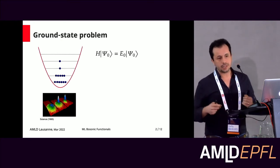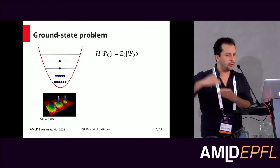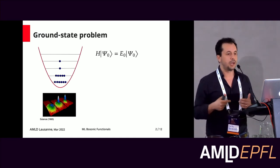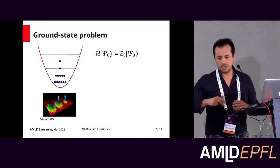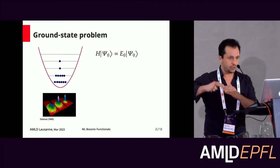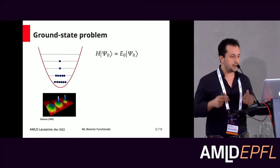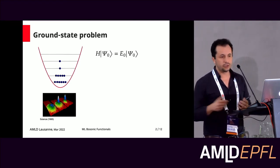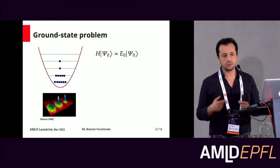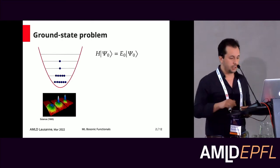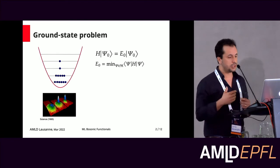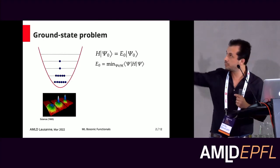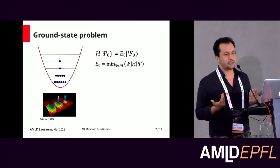The ground state could seem boring because it's only one state of all available states, but we usually think — especially in electronic systems — that the ground state is a very good approximation for real states. Even though you have temperature and a bunch of excited states, usually the ground state for chemical systems and material science is a good approximation of the properties of the system. For the case of bosons this is even more dramatic, because bosons can be achieved at very low temperatures. In bosons and fermions, we have a Hamiltonian, and we solve it by minimizing the expected value of the Hamiltonian in the Hilbert space.